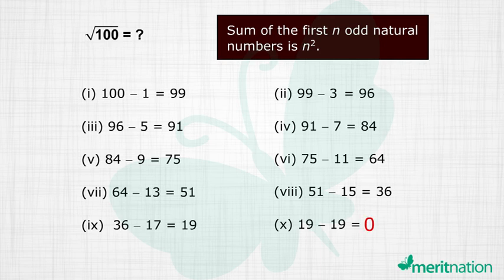We have got a 0. So what is the square root? Be careful, not 19. You have to count the number of steps. And we got a 0 at the 10th step as you can see. So since it is the 10th step, square root is 10.